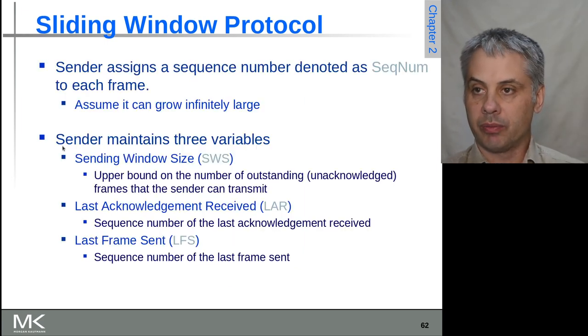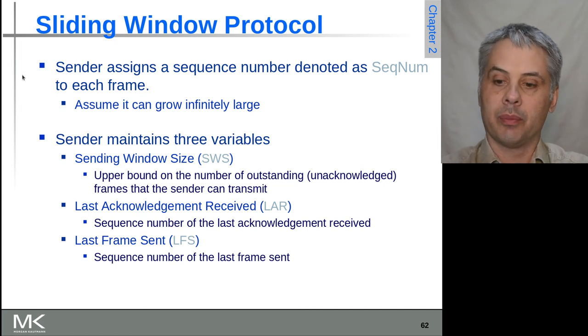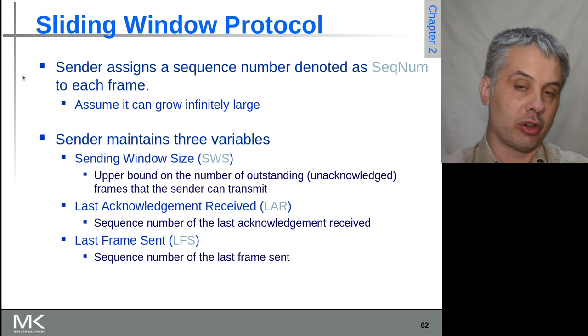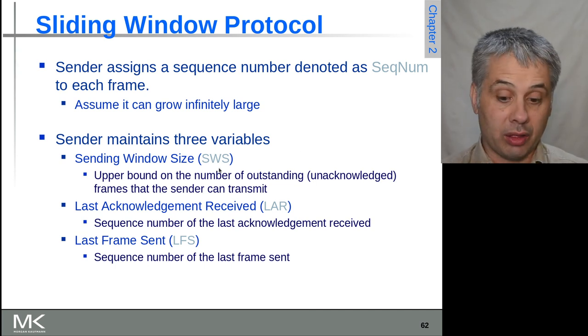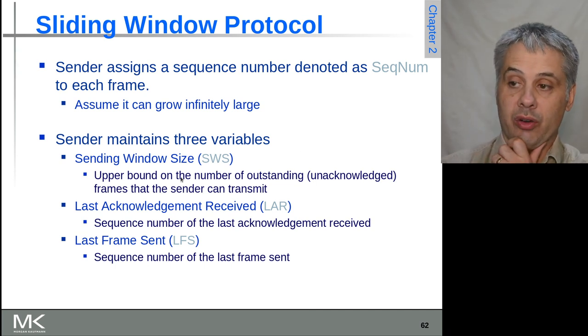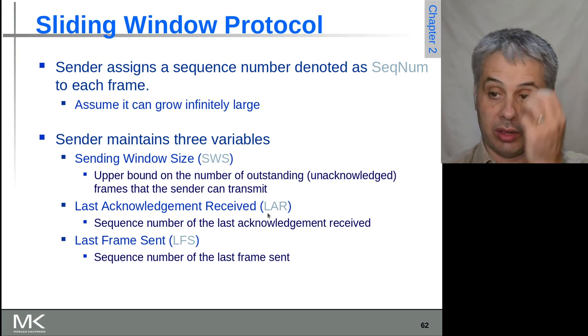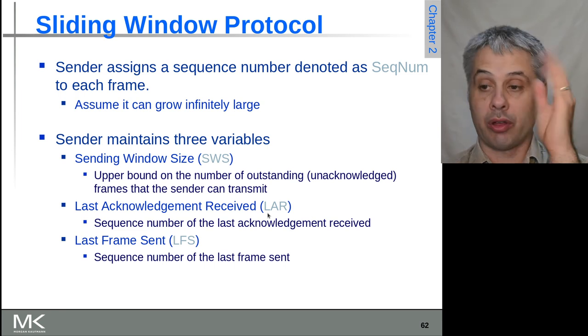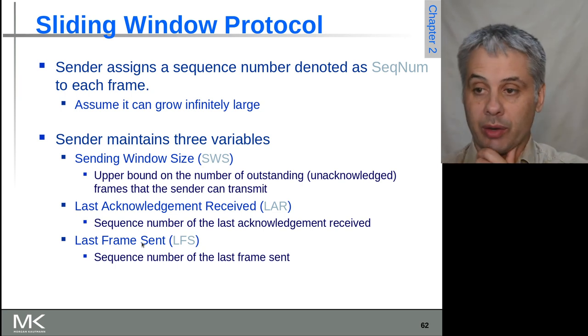Now we have larger sequence numbers that are attached to each frame. In theory, we could actually make it infinitely large. In practice, 32 or 64 bits is usually ample for a sequence number. The sender needs to keep track of three things: one is how large a window it's allowed to have for unacknowledged frames, it needs to know the last acknowledgement received so it knows where the window starts, and it needs to know the last frame sent so it can keep marching through that window.